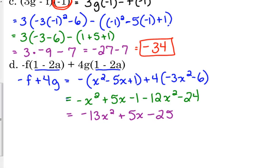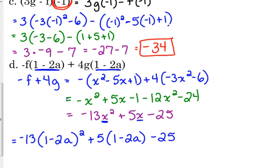So, now my linear combination, that is negative f plus 4g. That is that simplified. But, that wasn't the whole problem. The whole problem said I need to plug in 1 minus 2a. So, in this expression, everywhere I see an x, I'm going to replace it with 1 minus 2a. So, we've got negative 13 times 1 minus 2a squared plus 5 times 1 minus 2a minus 25.